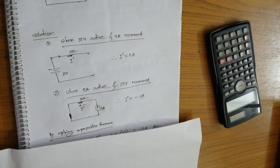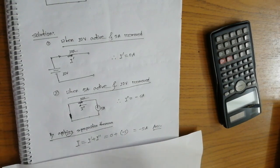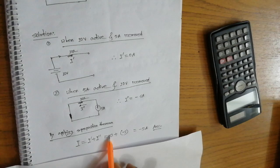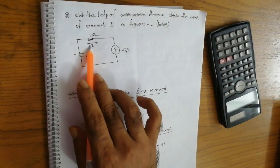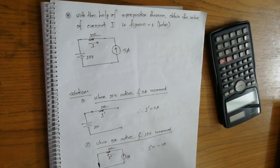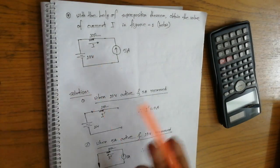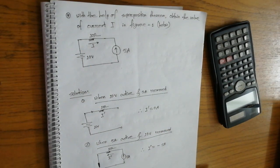The last step is to apply the superposition theorem by doing the algebraic summation: i equals i prime plus i double prime. i prime equals 0 and i double prime equals minus 5A, so i equals minus 5A. The current direction is therefore opposite to the assumed reference direction.